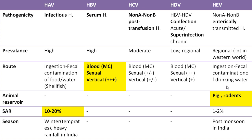Hepatitis D virus itself cannot cause pathogenicity on its own, but when associated with hepatitis B infection — either as co-infection or super-infection — co-infection causes acute hepatitis while super-infection causes chronic hepatitis. Regarding prevalence, hepatitis A and B have very high prevalence, followed by hepatitis C, while HDV and HEV have only regional prevalence.